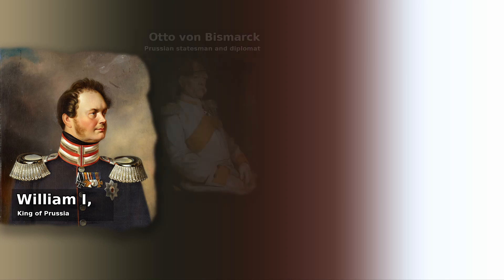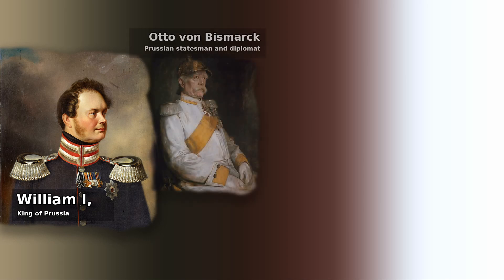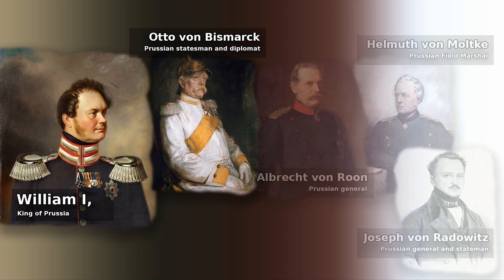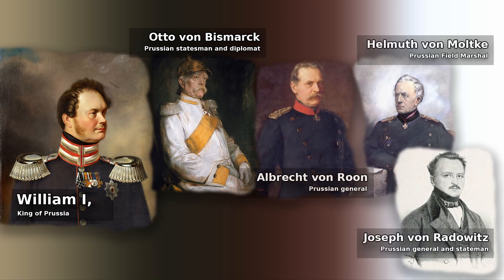As a result of the revolutions in 1848, Frederick William would appoint Otto von Bismarck as the first Prussian chancellor. In 1849, Bismarck, along with Roon, Moltke, and Radowitz, all played critical roles in reshaping the balance of power in Europe.